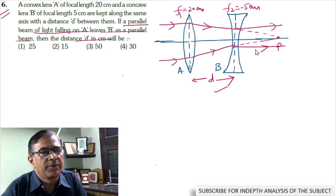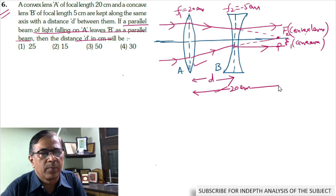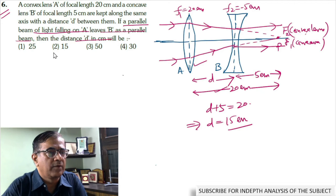If we look at the definition of second focus of the convex lens and the first focus of the concave lens, these points happen to be the same. This distance is 20 cm and this separation is 5 cm. From the figure, D plus 5 equals 20 cm, which implies D equals 15 cm. Hence, option B is correct.